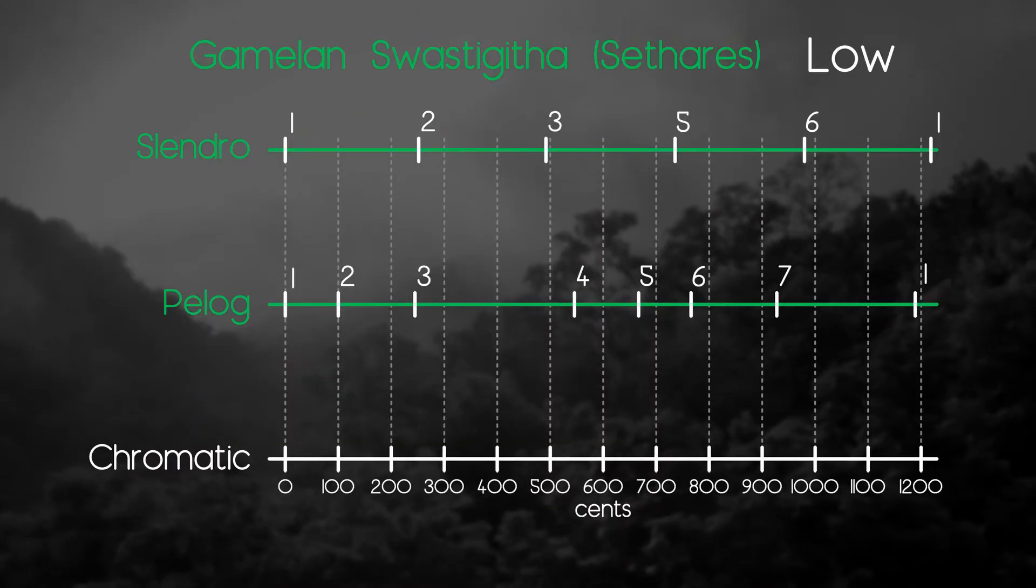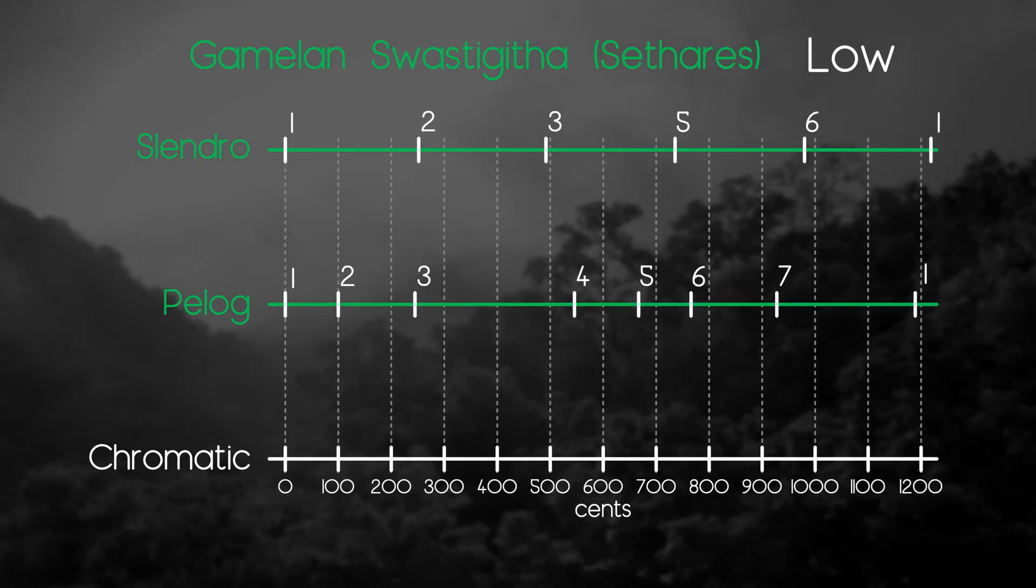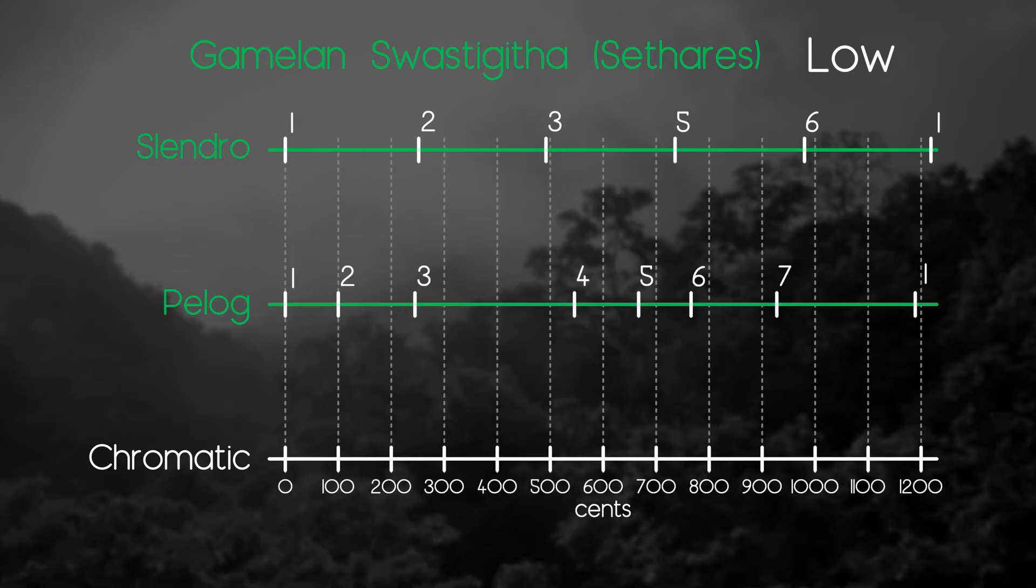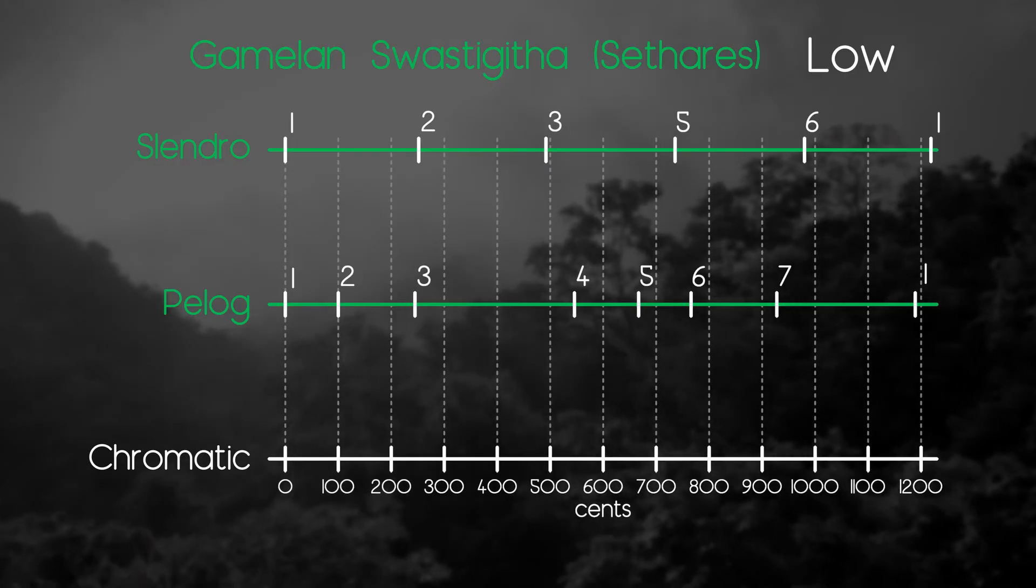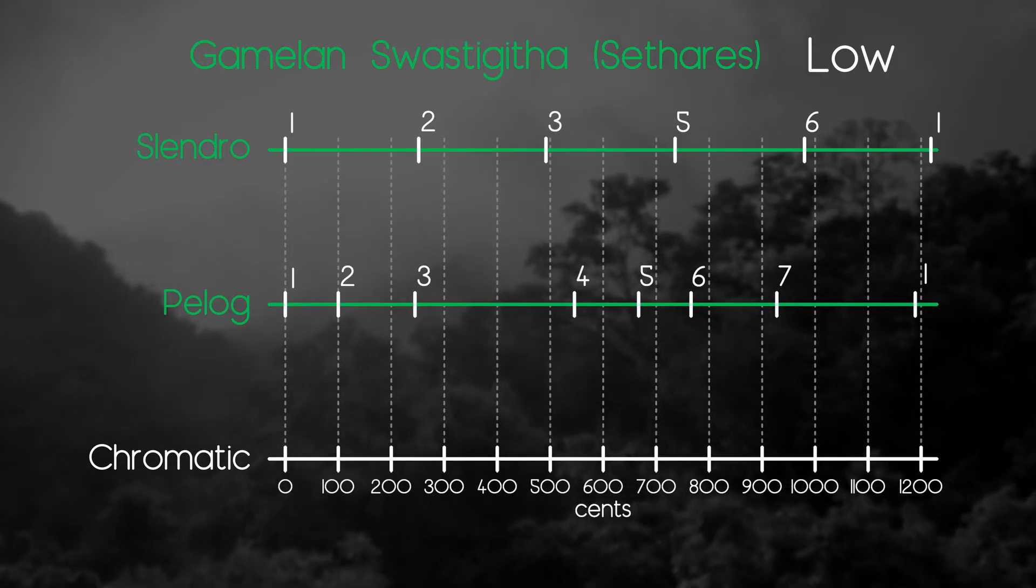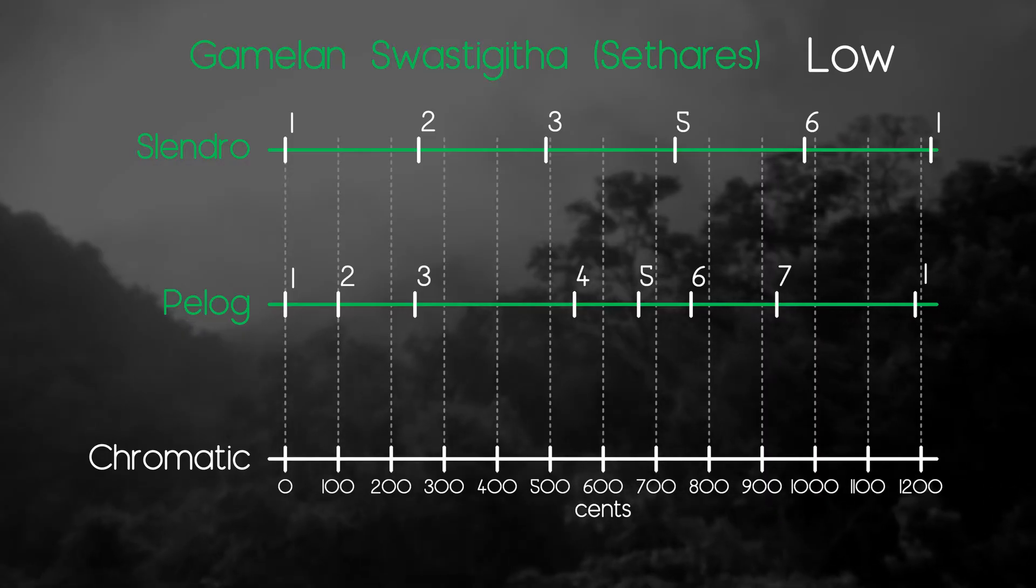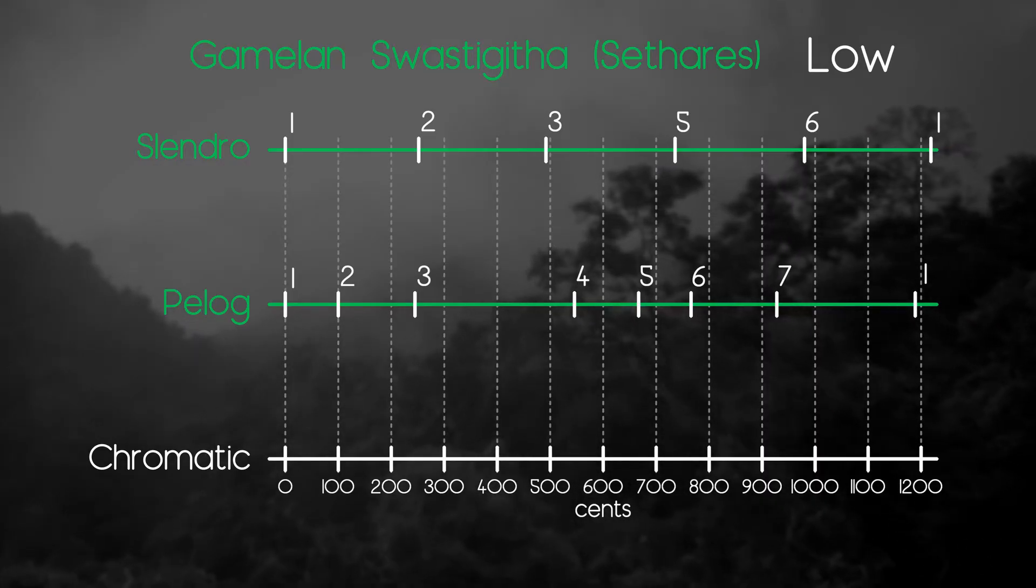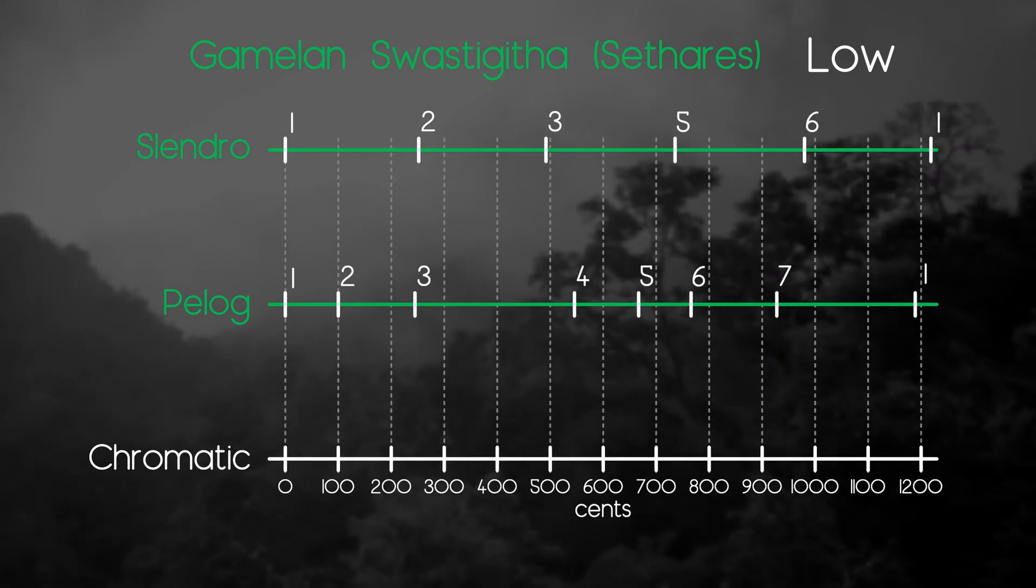The notes in Gamelan are usually referred to as numbers. In the low register, around 180 Hz, the tuning for Slendro and Pelog will look something like that. Not a single instrument can be tuned to both those systems at once. So the instruments really come in sets, one for each tuning. So Saron from Slendro's set cannot be played in Pelog Ensemble.